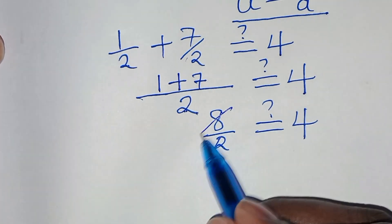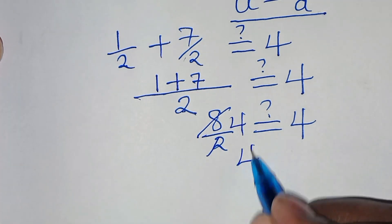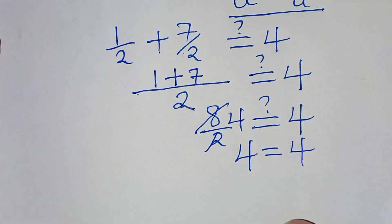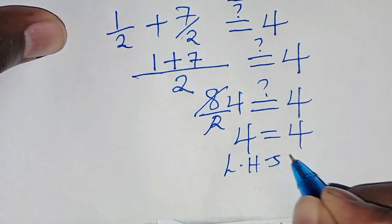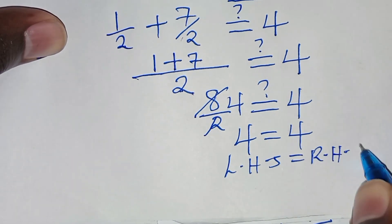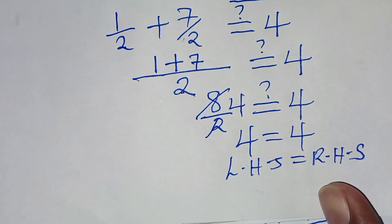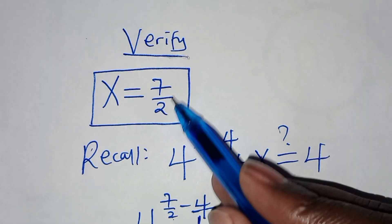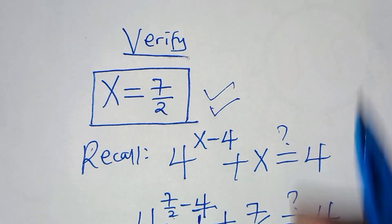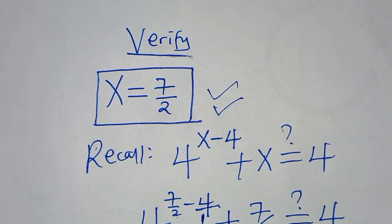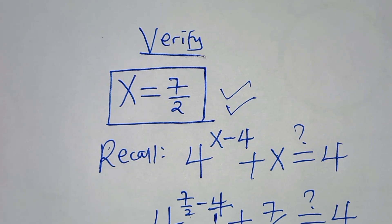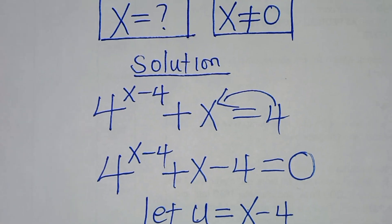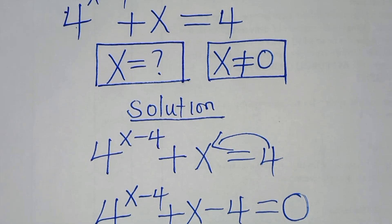So 8 over 2 is the same as 4, and we see that 4 equals 4. This implies the left hand side equals the right hand side, confirming that x equals 7 over 2 satisfies the equation. Kindly follow the steps, like this video and subscribe. See you in the next video.